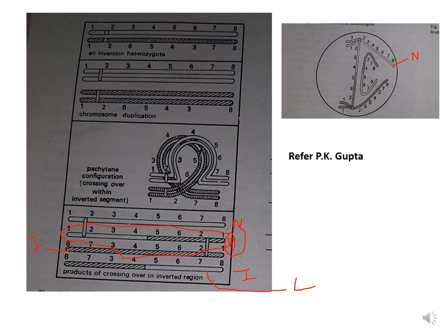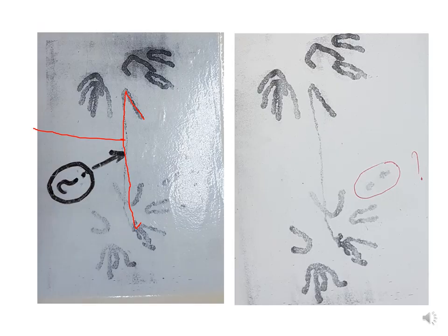This picture from PK Gupta shows the same phenomenon of paracentric inversion. The four products after paracentric inversion are: the first is a normal chromosome, the second is a dicentric chromosome shown in a circle, the third is an inverted chromosome, and the fourth is a laggard. How they orient themselves during anaphase has already been discussed.